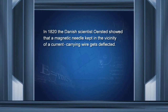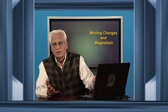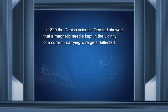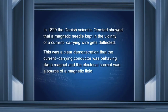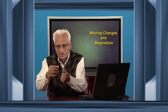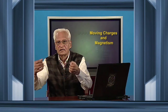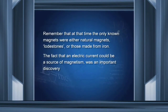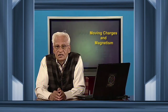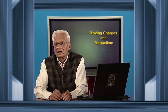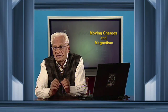In 1820, the Danish scientist Oersted showed that a magnetic needle kept in the vicinity of a current-carrying wire gets deflected. This may be common knowledge today, but it was first discovered in 1820 by Oersted. This was a clear demonstration that a current-carrying conductor behaves like a magnet. The fact that an electric current could be a source of magnetism was a very important discovery.